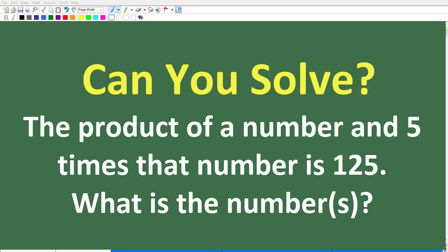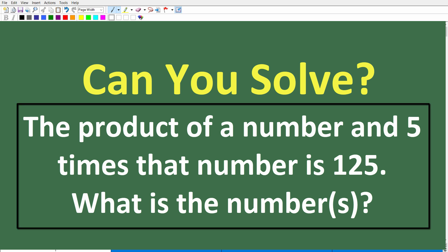So let's go ahead and read it and we'll talk about how to figure it out here in a second. But let's take a look at the problem. So it says the product of a number and five times that number is 125. And the question is, what is the number or numbers?